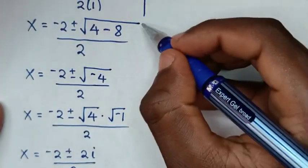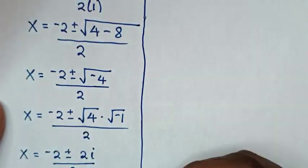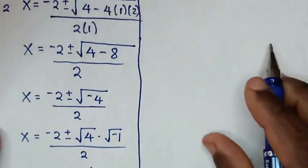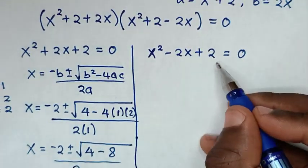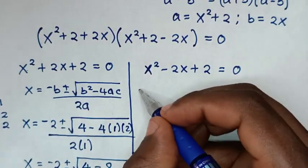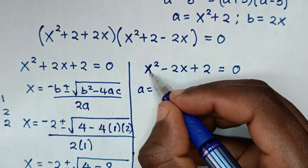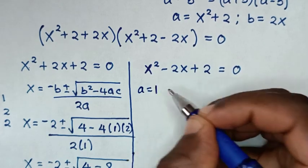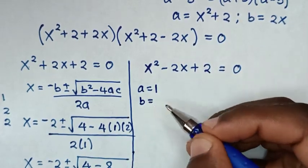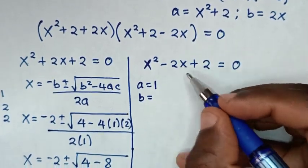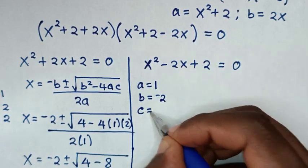To solve the second solution, we'll also use the quadratic formula. Here a equals the coefficient of x squared, which is 1; b equals the coefficient of x, which is negative 2; and c equals the constant, which is 2.